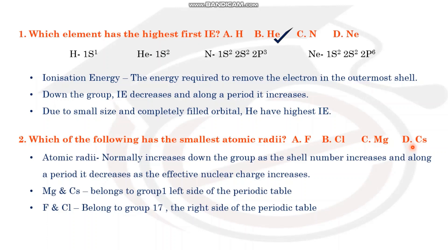If you have a greater number of shells, the size increases. That is a periodic trend. Effective nuclear charge will decrease. Fluorine and chlorine are in the 17th group on the right side of the periodic table. Magnesium and caesium are in the first group on the left side.